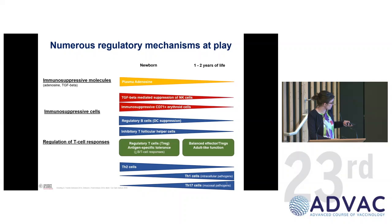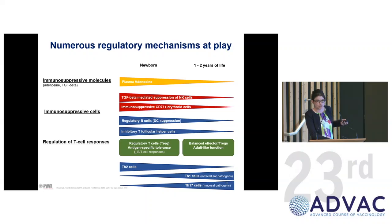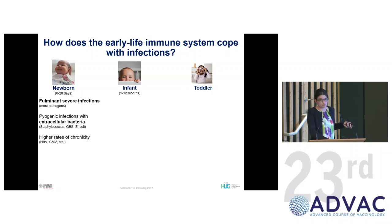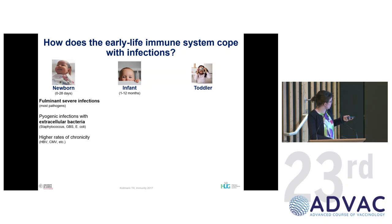Interestingly, newborns have more of a Th2-skewed response, and only slowly over time do Th1 cells increase — the ones important for targeting intracellular pathogens — and Th17 cells increase as well, which are important for mucosal pathogens. Keeping this in mind, newborns are very prone to severe infections from most pathogens because the immune system is highly regulated and very few cells can respond effectively to intracellular or extracellular pathogens. Mostly we fear extracellular bacteria like Staphylococcus, Group B Streptococcus, and Escherichia coli — the neonatal sepsis that pediatricians know well.